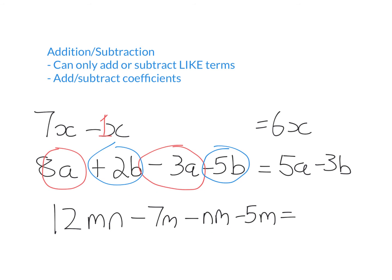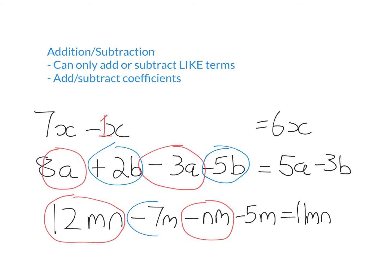So for this expression here, this term and this term are like terms because they both have 1m and 1n. It doesn't matter that the pronumerals are written in a different order because the order of multiplication doesn't matter. So 12mn minus nm is just 11mn. This term and this term are also like terms, so negative 7 subtract 5 is negative 12, and we just write the coefficient and the pronumeral. Now I can't simplify this any further — these two terms are not like terms because one has an n and the other doesn't.